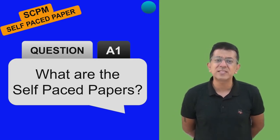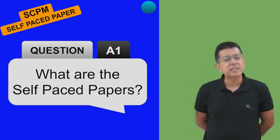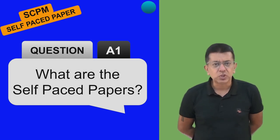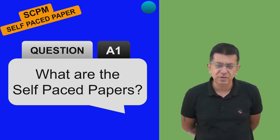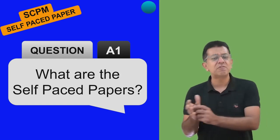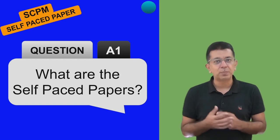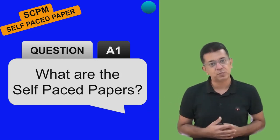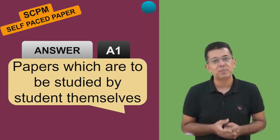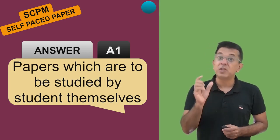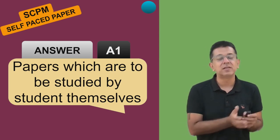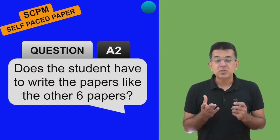The first question: what are self-paced papers? In the earlier scheme there were eight papers, out of which two papers were Law and Strategic Cost and Performance Evaluation - paper three and paper five. Now ICAI wanted the number of papers restricted to six, so two papers out of the eight were shifted to self-paced papers. The marks of both these papers will not be counted with the other six papers, so you'll be getting marks out of 600, not 800.